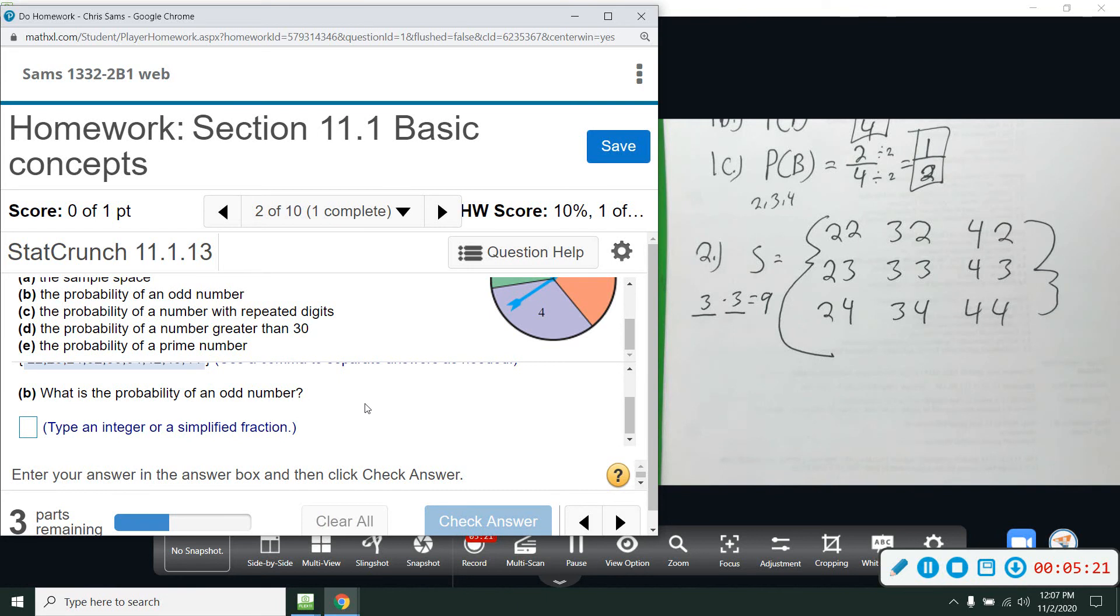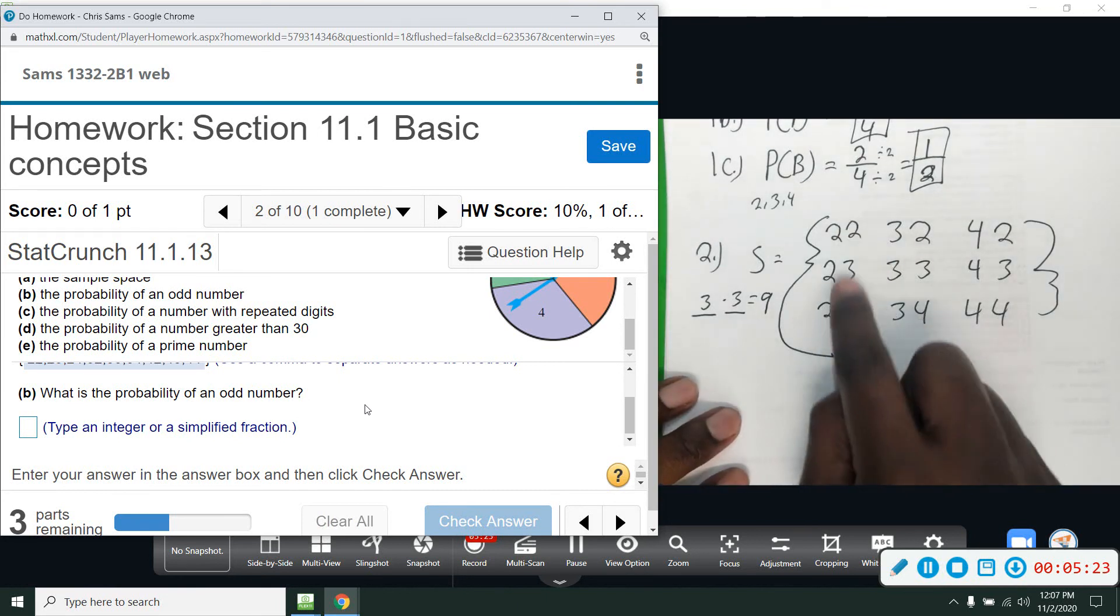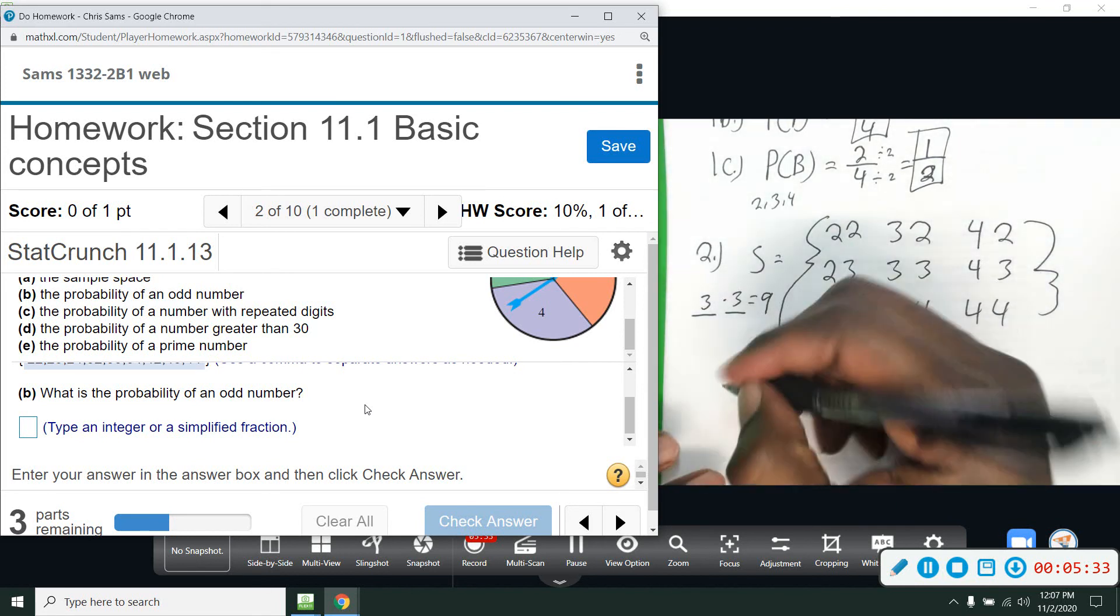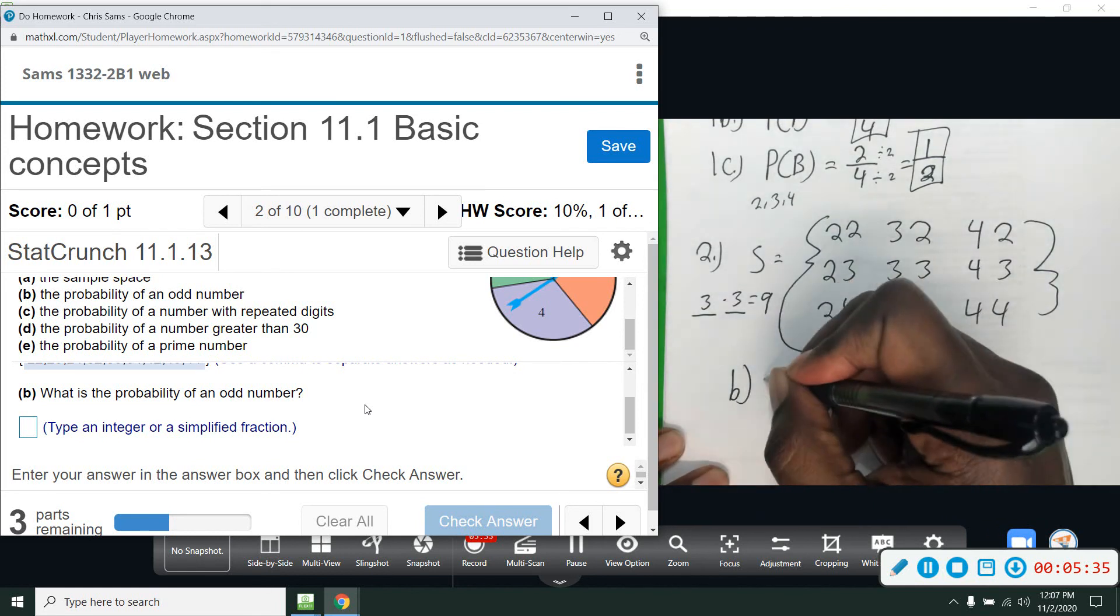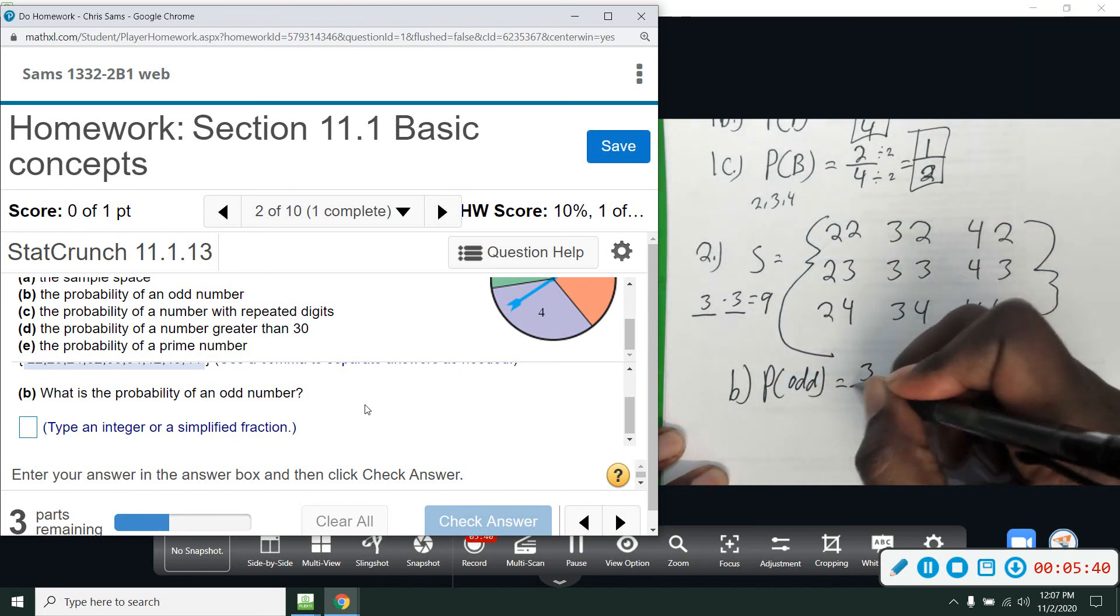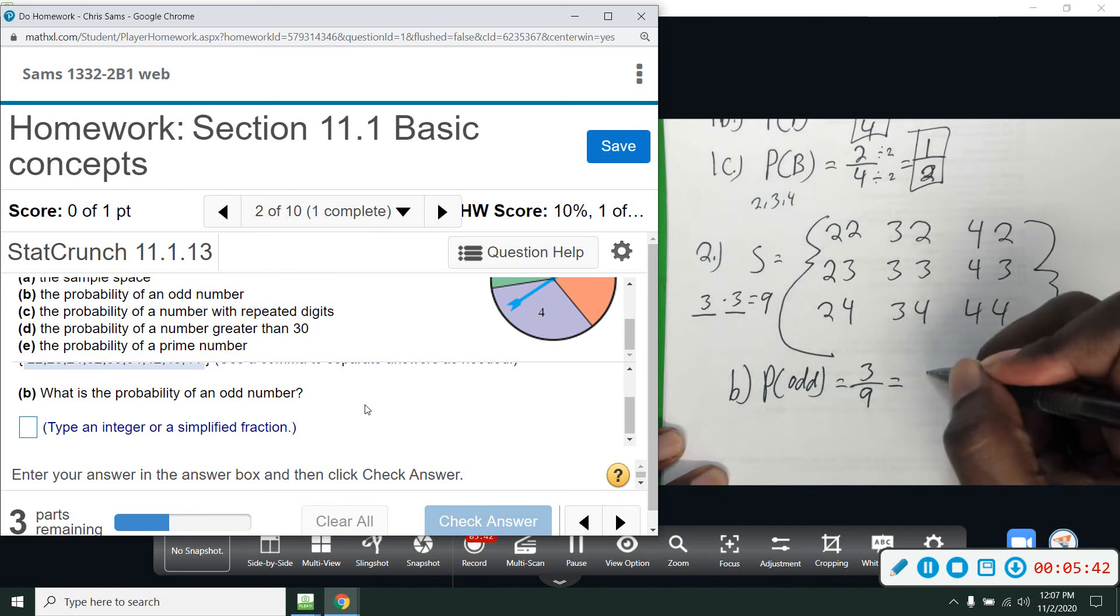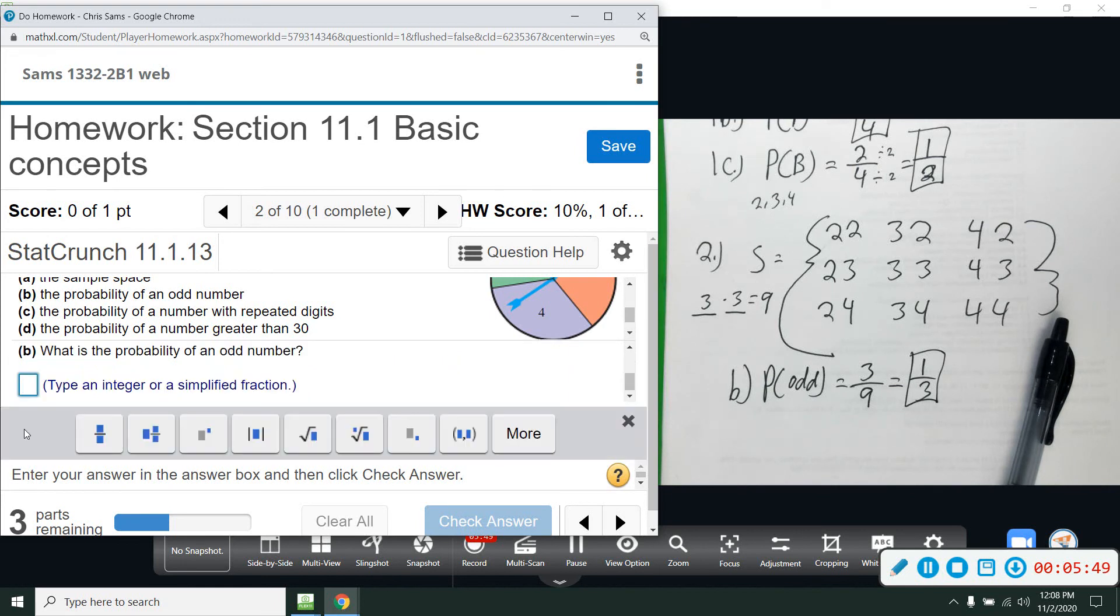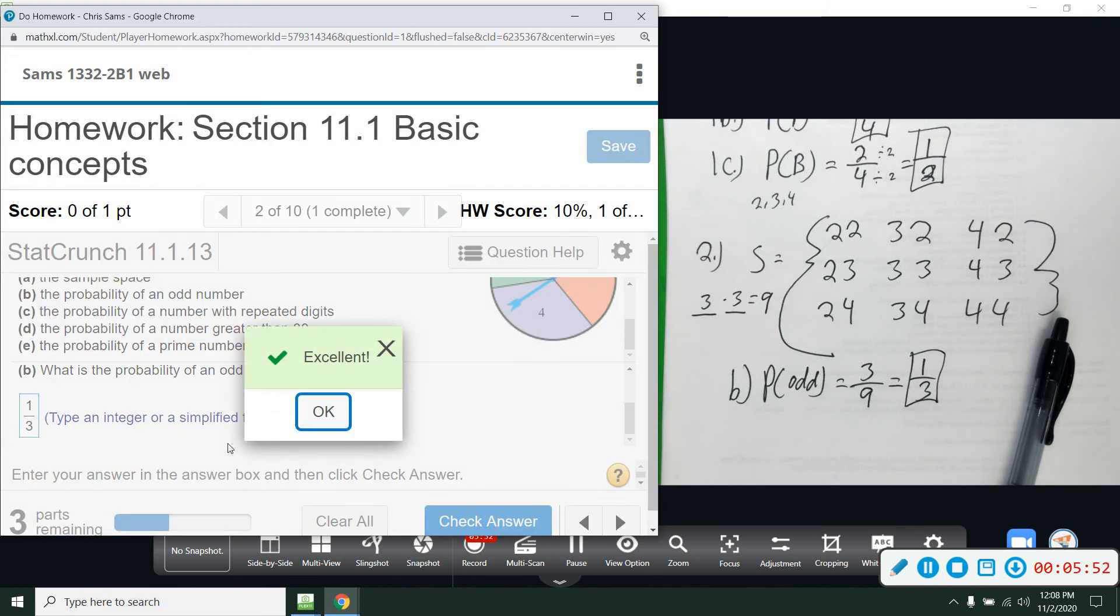Probability of an odd number. So the number has to end in an odd number - so these three, because the rest of them end in an even number. So 3 out of 9. So remember, part over whole. So B, we want the probability of odd, and that is 3 out of 9, which reduces to 1/3. Both of those numbers are divisible by 3.